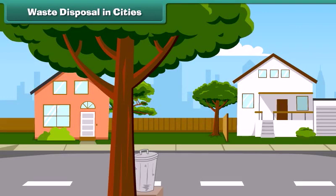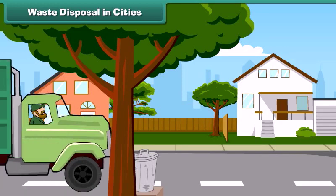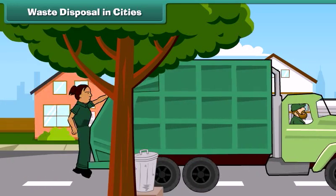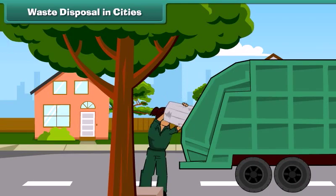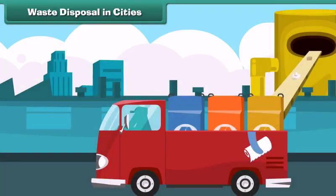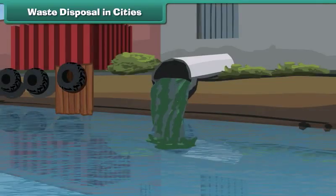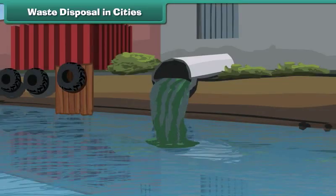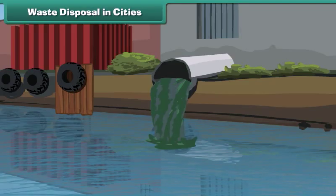Waste disposal in cities: The waste from our homes is first collected and treated in municipal sewage treatment plants, and only then disposed of into water bodies like rivers. Waste treatment ensures that rivers are not polluted.